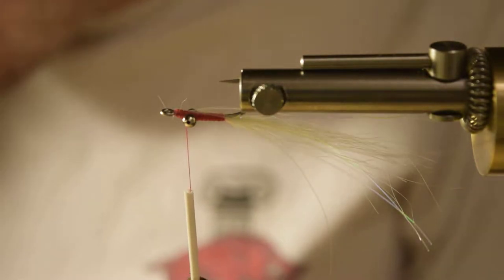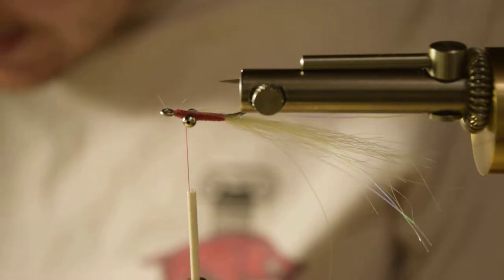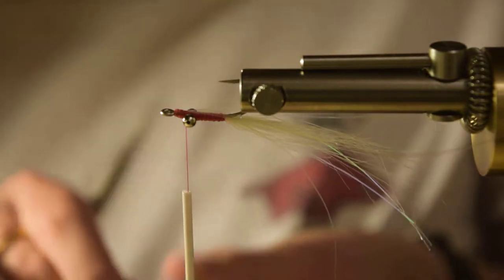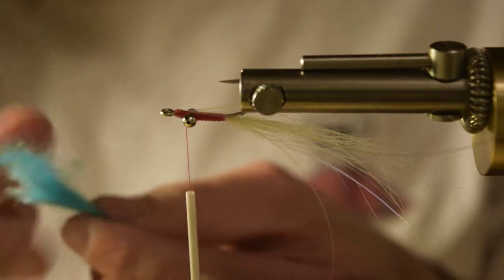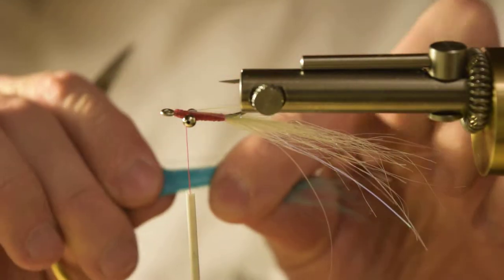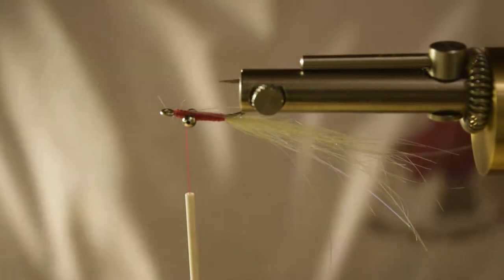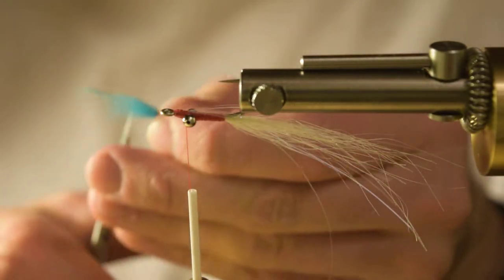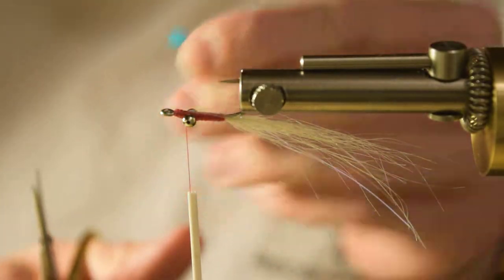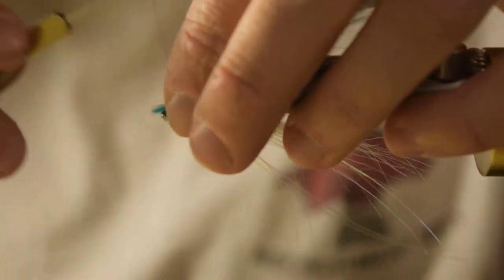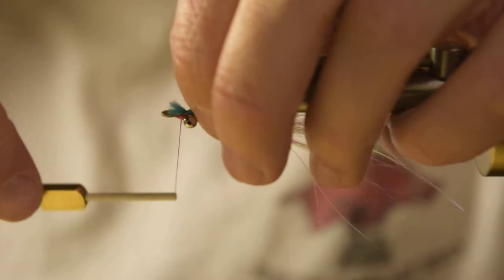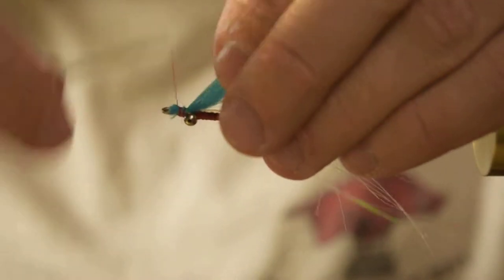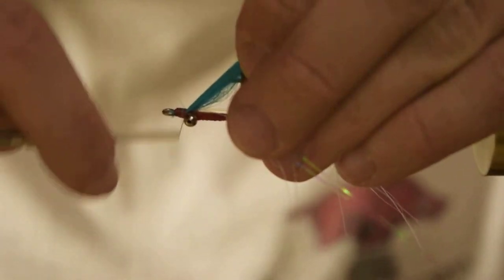Again, about an inch square area you're going to cut off. Just about like that. I have all that underfur in there. I'm going to hold down and pull out all that underfur. Throw that aside. Come in and make a nice even cut. Lay it over the hook. Take a loose wrap. Pull so it's not covering the hook eye. And then take some nice tight wraps to secure that in.